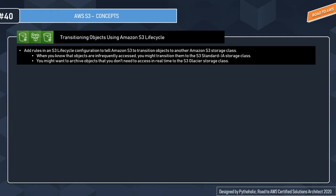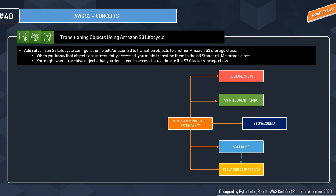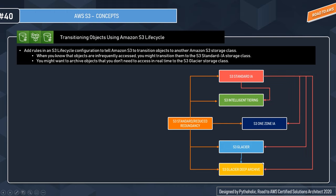Amazon S3 supports a waterfall model for transitions between storage classes. S3 Standard (or Reduced Redundancy) can transition to any other storage class: Standard IA, Intelligent Tiering, One Zone IA, S3 Glacier, or S3 Glacier Deep Archive. S3 Standard IA can transition to Intelligent Tiering, One Zone IA, Glacier, and Deep Archive. Intelligent Tiering can transition to One Zone IA, Glacier, and Deep Archive.